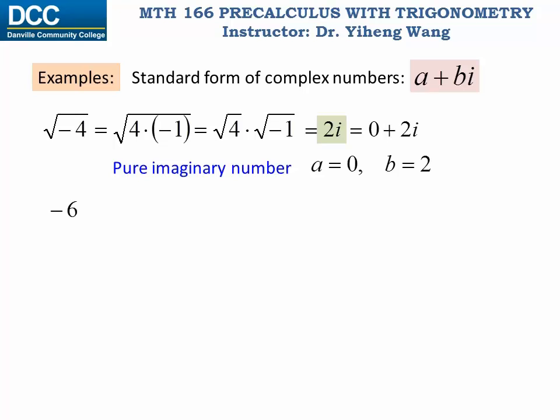Then we have the real number negative six. Since real numbers are also complex numbers, it can also be written in standard form as negative six plus zero i. This is a real number because its real part a is negative six, but the coefficient for its imaginary part b equals zero.